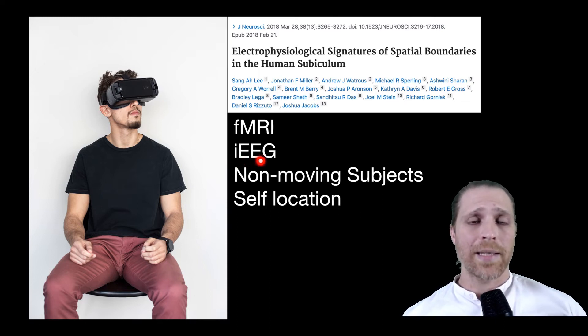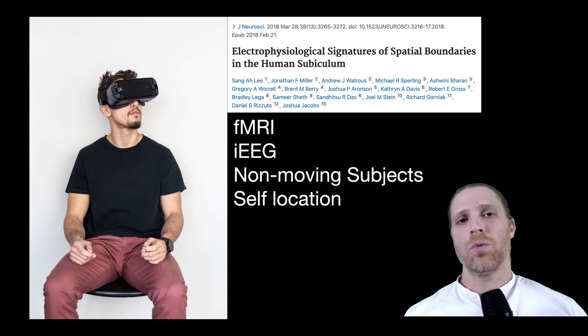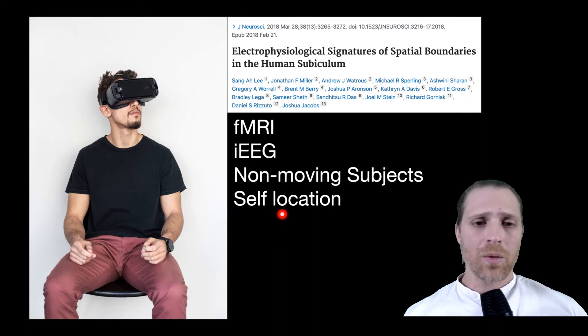They also used intracranial EEG, which enabled them to study the electrical activity of the cells in that brain region. However, in that study, the researchers studied non-moving subjects. So these subjects were either seated or they stood and they had a virtual reality apparatus or a computerized interface in which the environment was projected in front of them. So they virtually walked in the environment. Also, in this study, they were able only to record the self-location of the individual next to a border.